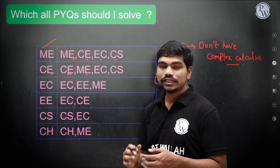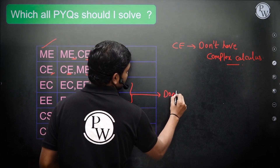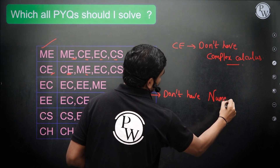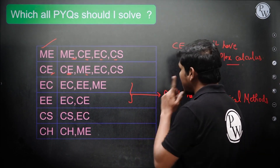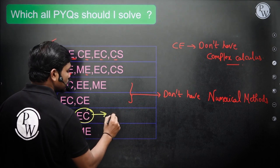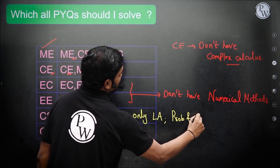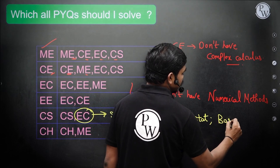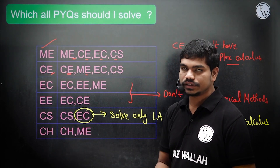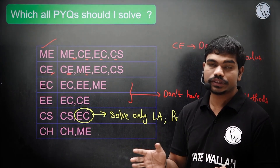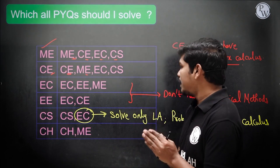For EC and EE branches, they don't have numerical methods, so skip those. For computer science and EC, solve only linear algebra, probability and statistics, and single variable calculus. For chemical engineering, go for chemical and mechanical questions. The key point: don't spend time on all available questions — first spot the topics not in your syllabus, eliminate them, and spend your time only on the remaining relevant part.